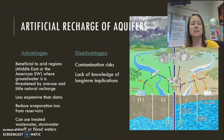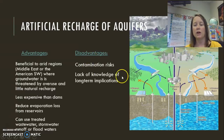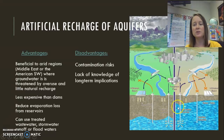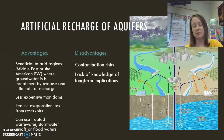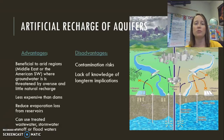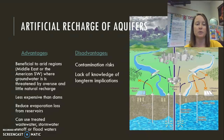Another option is to artificially recharge aquifers. Because we are overdrawing our groundwater, the water table is dropping. If we pump water down into those aquifers, we can raise the water table. This is beneficial to arid regions like the Middle East, but also the American Southwest, where we are really overdrawing our aquifers. There is very little natural recharge because those areas are dry, so we can't depend on rainfall to raise the water table.